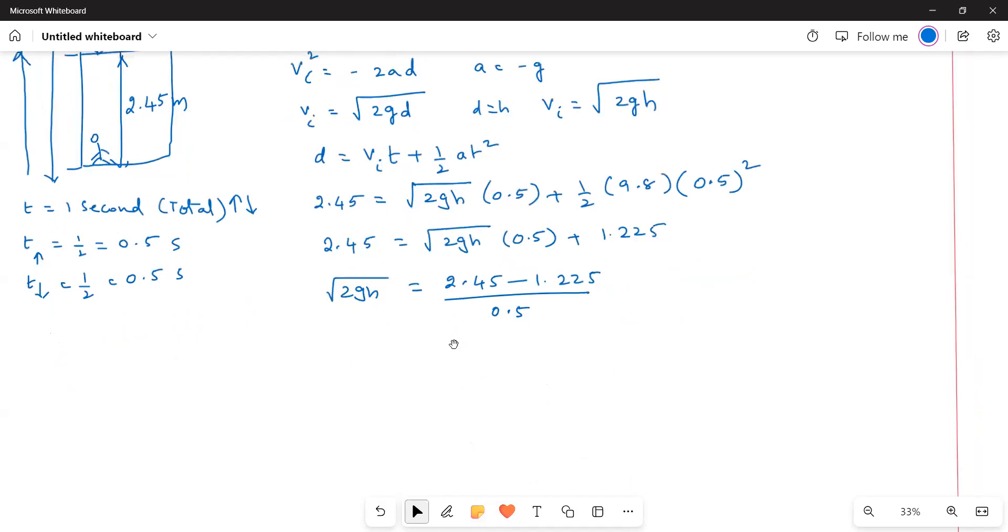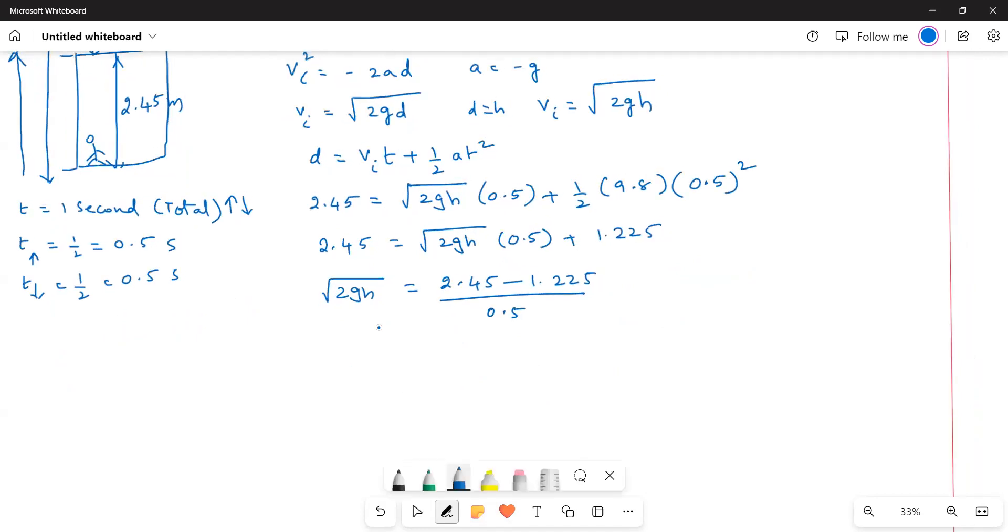So from this we can find out H. H is equal to 0.306 meters. So this is the height reached by the ball above the top of the window.